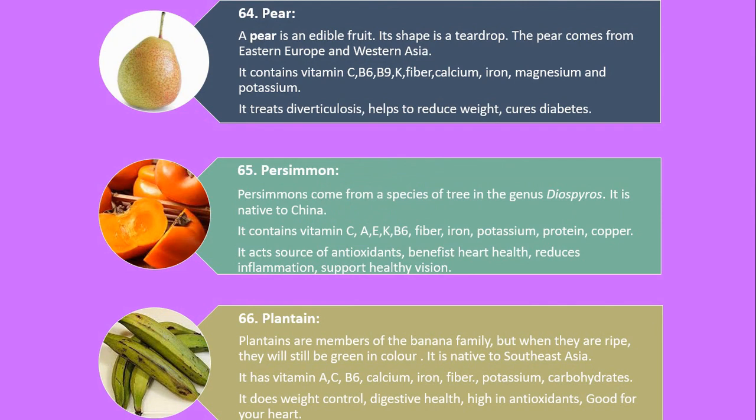Number 64. Pear. A pear is an edible fruit. Its shape is a teardrop. The pear comes from Eastern Europe and Western Asia. It contains vitamin C, B6, B9, K, fiber, calcium, iron, magnesium and potassium. It treats diverticulosis, helps to reduce weight, and cures diabetes.